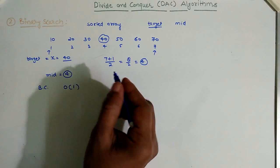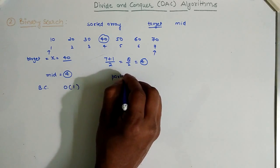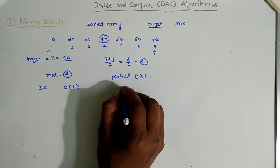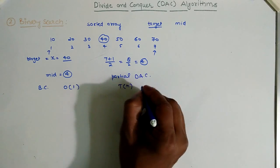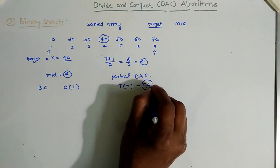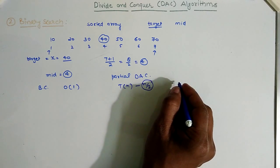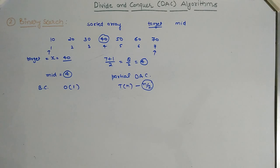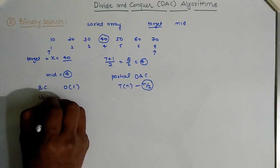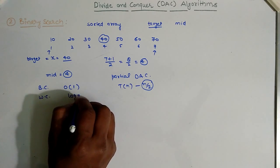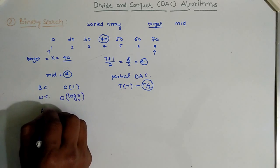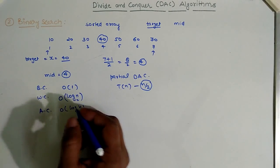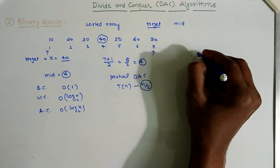Binary search is a partial divide and conquer approach because when dividing the T(n) problem into sub-problems, either the left part of size n/2 or the right part of size n/2 will be executed — not both — since the element is to be searched in only one half of the array. For the worst case, it requires O(log n base 2) time, and the average case also considers O(log n base 2) time.